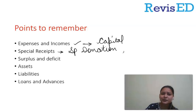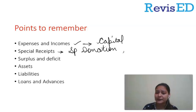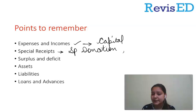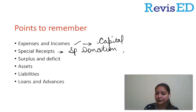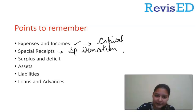Special receipts — we have talked about special donations, specific donations, and special funds. These are recorded in the balance sheet. If there is a normal receipt, that will be recorded in the income and expenditure account and not in the balance sheet.